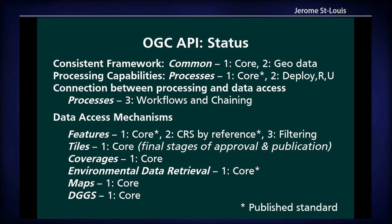OGCAPI Processes Part 1 Core is the proven published standard. Part 2 — Deploy, Replace, and Update — is still a draft specification, which will allow you to upload an application package to create a new process. And then Processes Part 3 — Workflows and Chaining — is the main focus of this talk, about connecting processes with the data access mechanisms like OGCAPI Features.